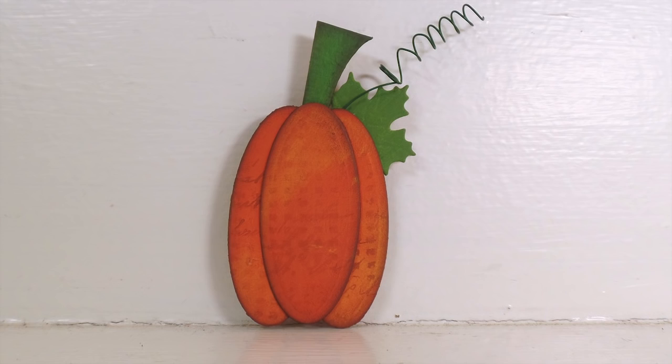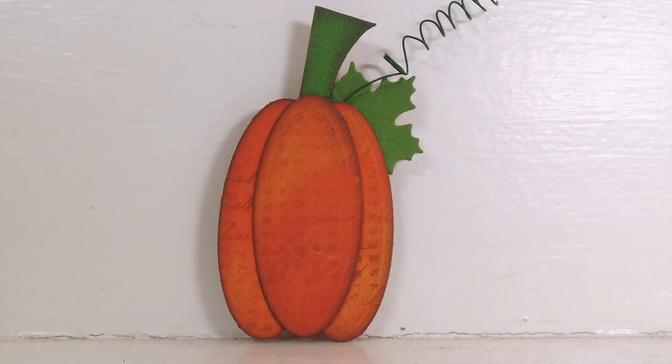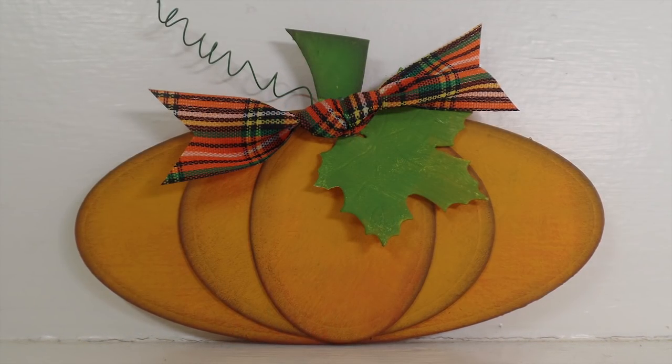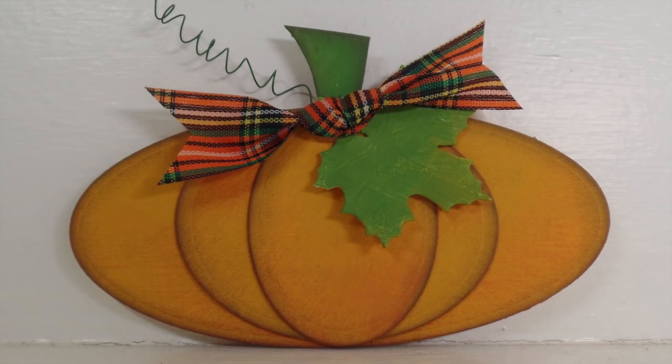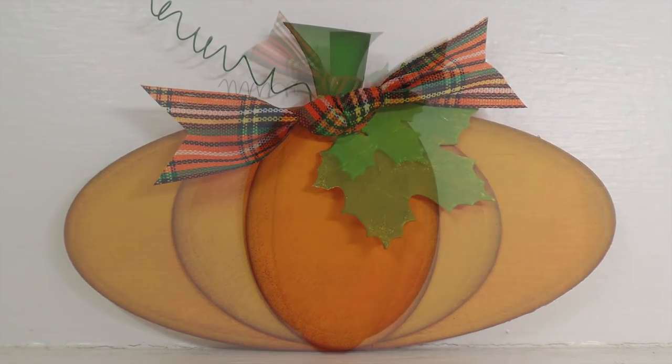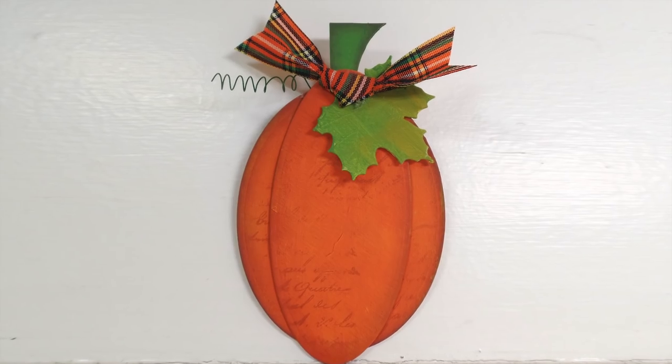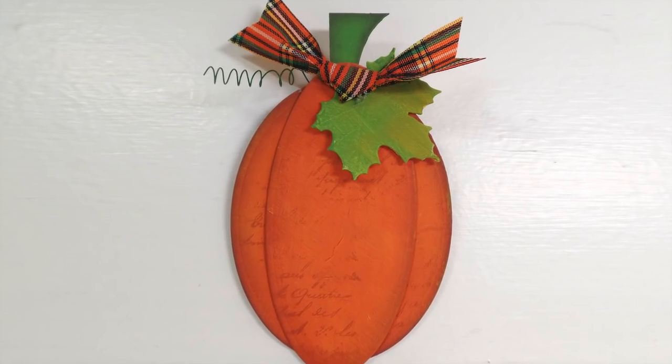This one here is done with a single oval die, and it has a magnet on the back. These ones are done with larger ovals and a larger leaf die. I actually have these ones on the fridge, but they would make cute tags or a garland even if you strung them together.